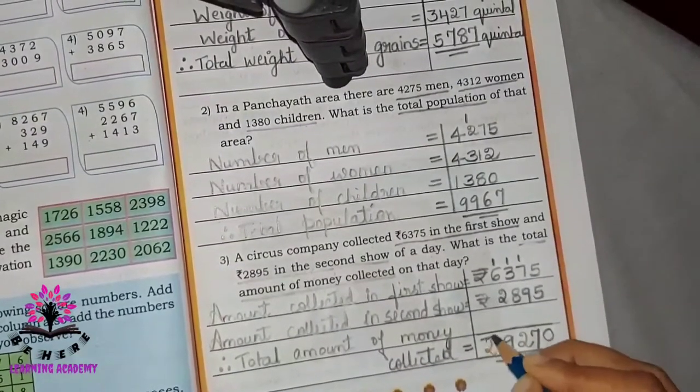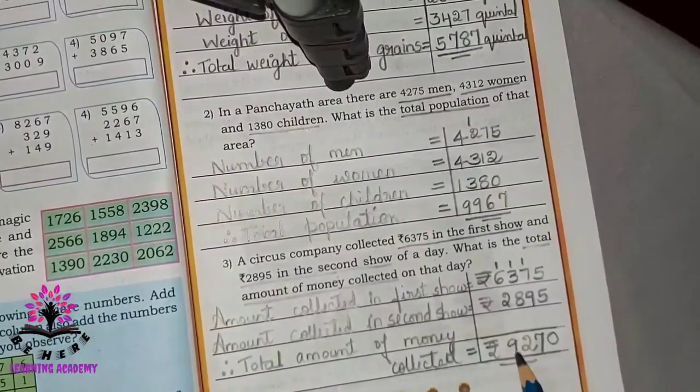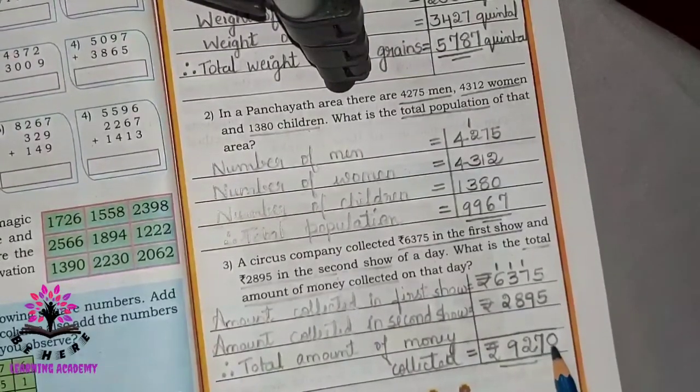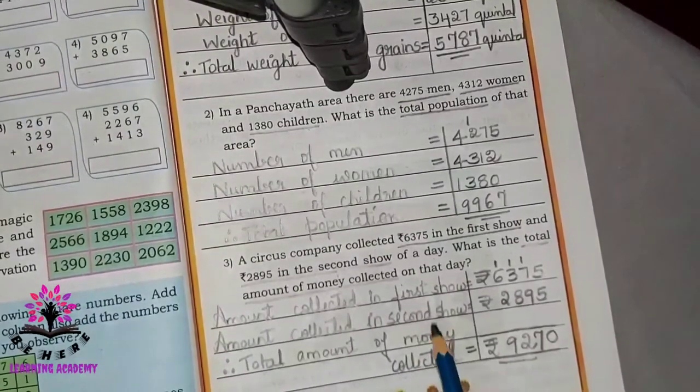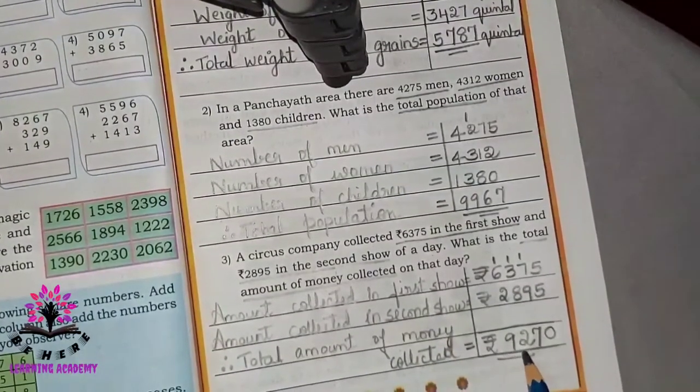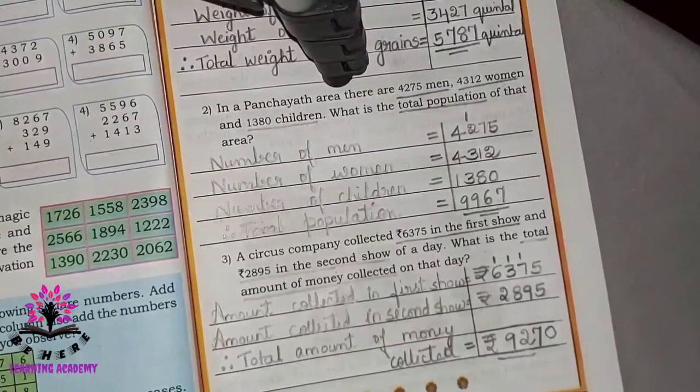Rupees 9,270. So the total amount of money collected is Rupees 9,270.